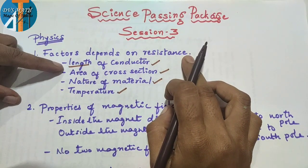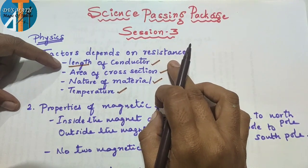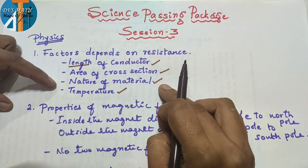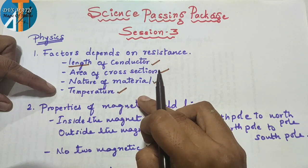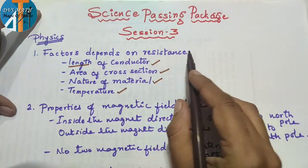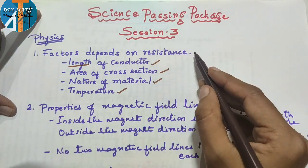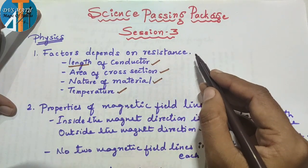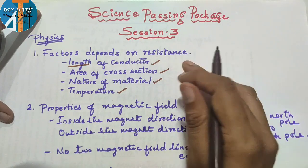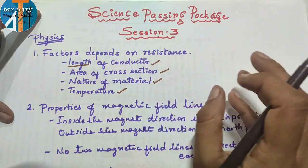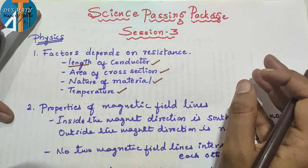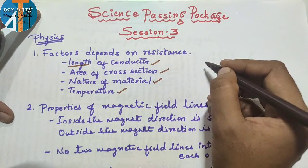So, one point each: first, length of conductor; area of cross-section; nature of material; temperature — four factors depend upon the resistance. If the length is doubled, the resistance is also doubled.